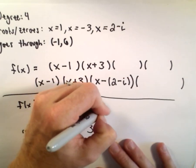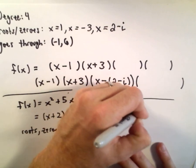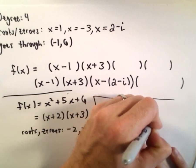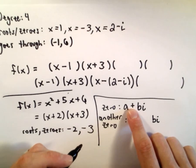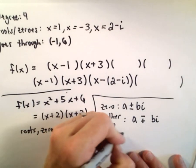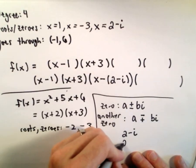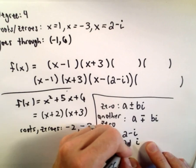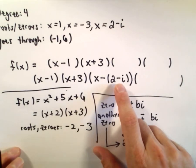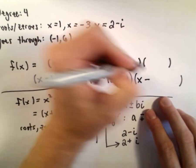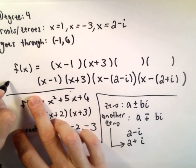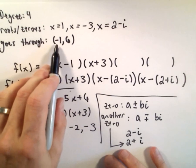Remember, there's the complex conjugate roots theorem. It basically says if you have a zero of the form a plus or minus bi, you're going to have another zero — you leave the a and the bi alone but flip the sign. So if it was 2 minus i, we know that 2 plus i is going to be another zero. So I'm going to write x minus the quantity 2 plus i for that fourth factor.